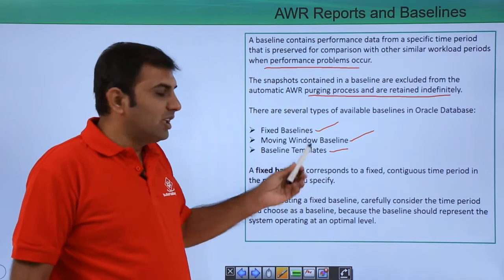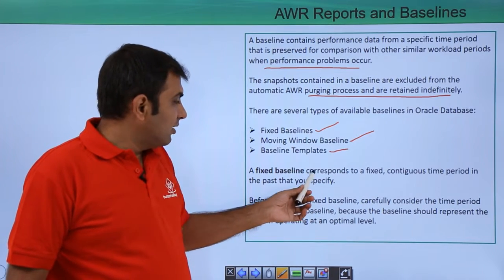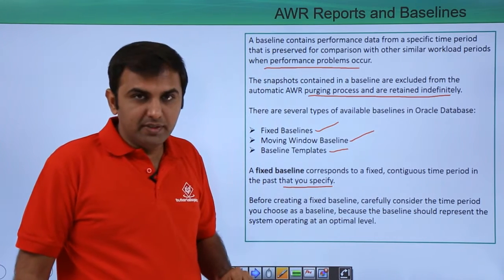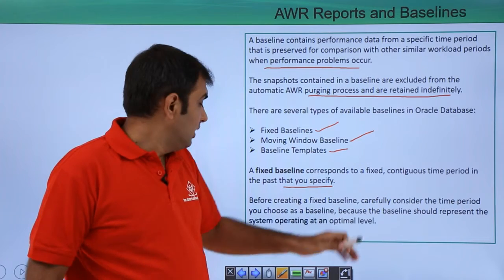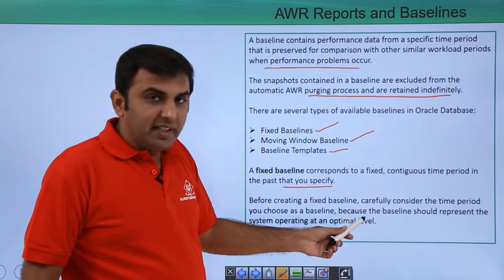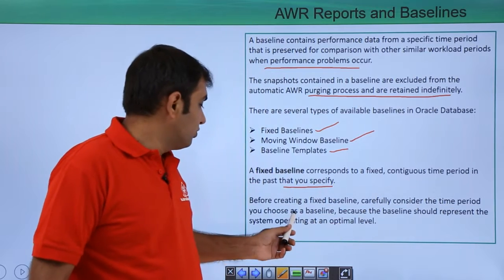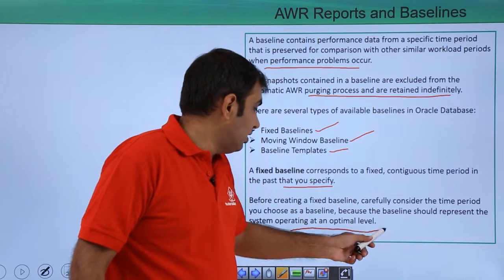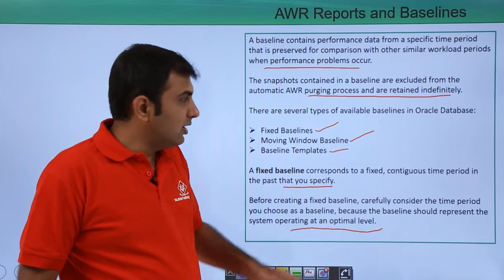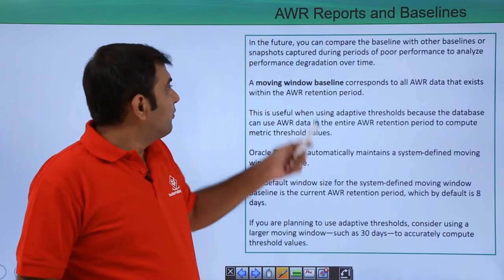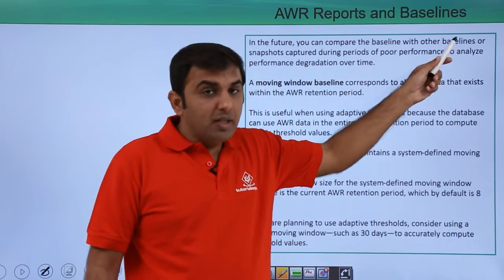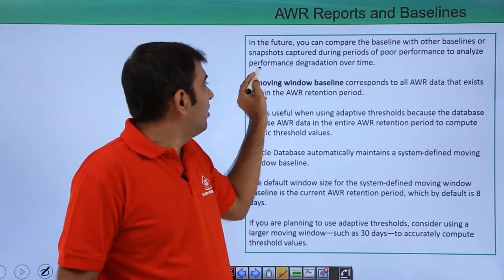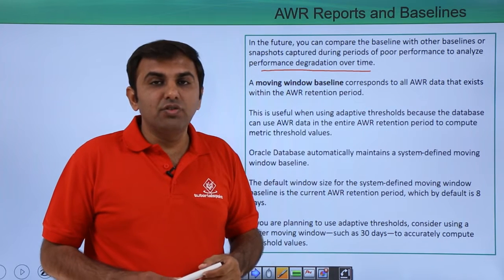The first type is the fixed baseline. A fixed baseline corresponds to a fixed continuous time period in the past that you have specified. Before creating a fixed baseline, carefully consider the time period you choose, because the baseline should represent the system operating at the optimal level. In the future you can compare the baseline with other baselines or snapshots captured during a period of poor performance to analyze performance degradation over time.